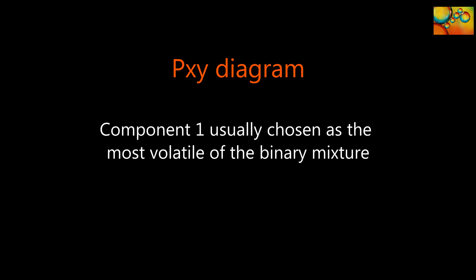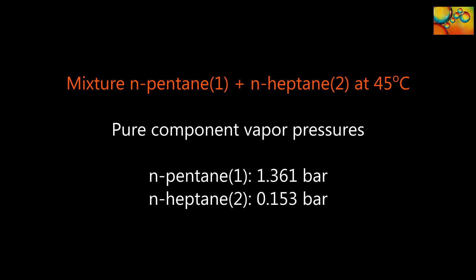In the conventional representation of PXY diagrams, component one is assigned to the component with the highest volatility. This is what we will do in the example we will study in this video. We will deal with a mixture of n-pentane and n-heptane at 45 degrees Celsius. At this temperature the vapor pressures of these components are equal to 1.36 bar and 0.15 bar. n-pentane has the highest vapor pressure and number one is assigned to it.